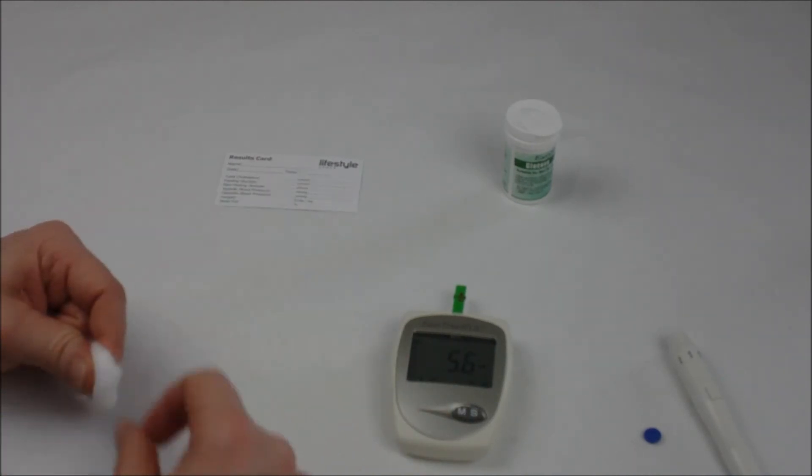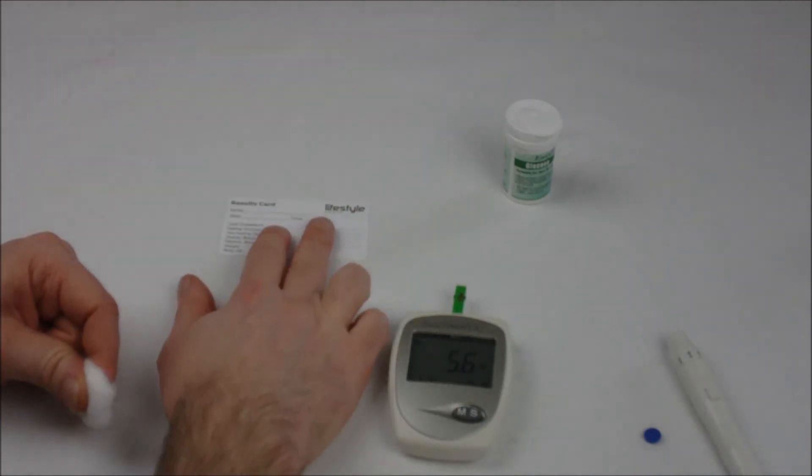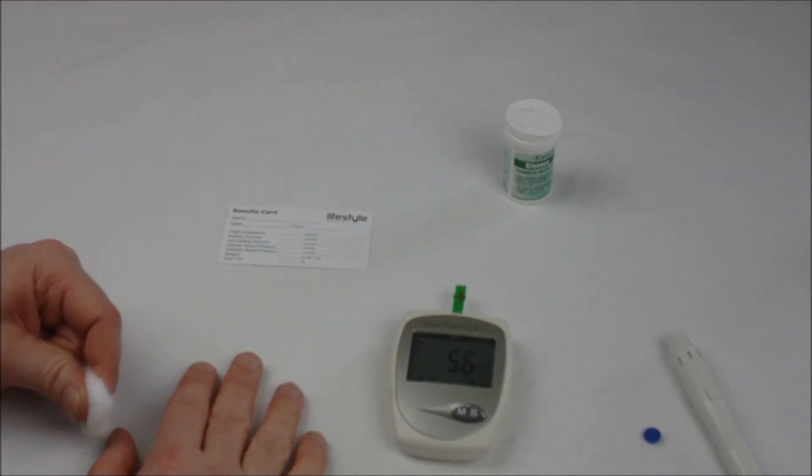Write your fasting blood glucose level down on your card, and then you can go to the website healthcheckinabox.com and enter that in at the results analysis page.